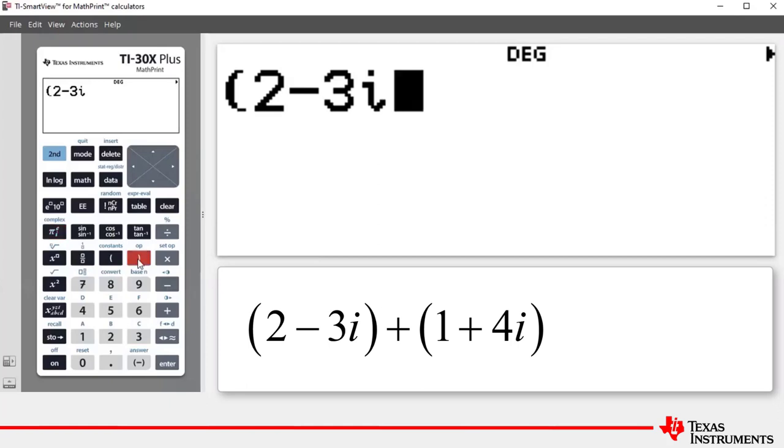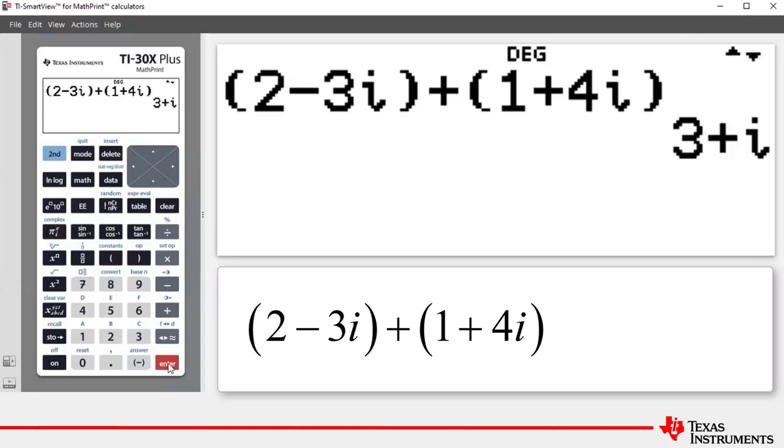Press the close bracket, plus open bracket, one plus four, and then our multitap key to access i, close bracket, press enter. We can see that we add the real parts and we add the imaginary parts. The sum of those two complex numbers is three plus i.